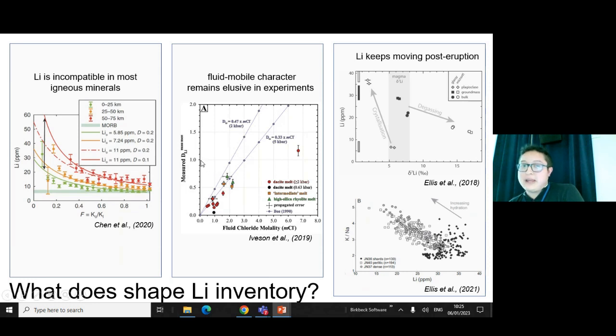Basically they showed that regardless of the different situations they tried, lithium partitioning is always preferring the melt phase. So according to this experimental work, lithium fluid mobility remains elusive. Last but not least, it's important to point out that lithium keeps moving even after leaving the magma reservoir. If you don't quench the material, lithium keeps diffusing. If you keep crystallizing for example in amphibole, then lithium will also start moving—not only the element but also the isotopes.